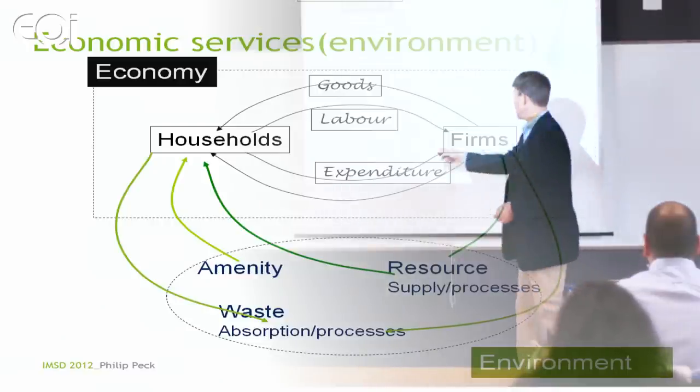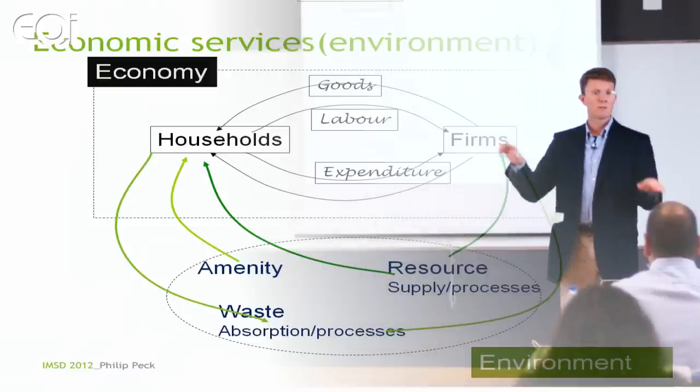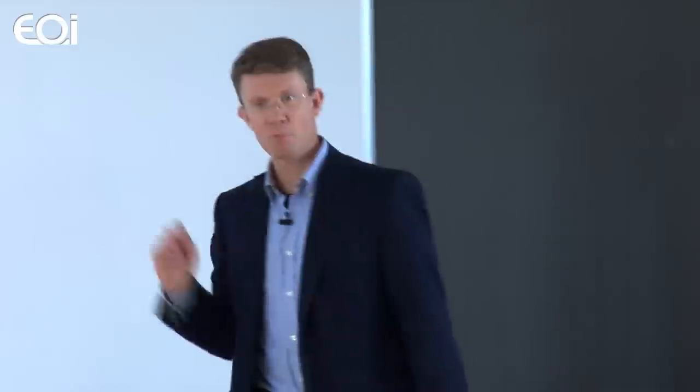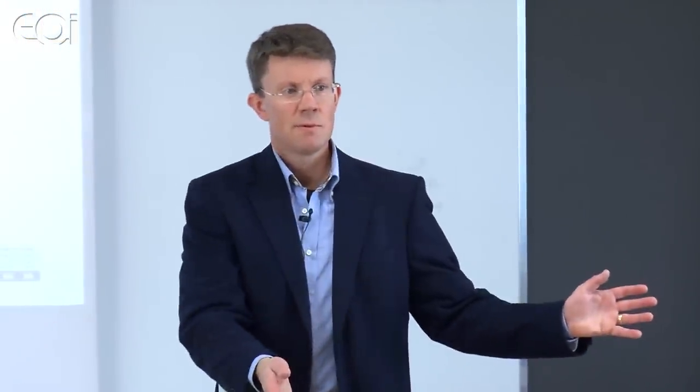That goes back into the environment which either becomes a storage for waste, or a process that converts or neutralizes waste. It can also deliver processes that control things like climate — on a global scale we talk about climate change; on a local scale, if an area has been deforested you can have changes to the microclimate. So: microclimate, regional climates, global climate — these are where the processes get changed. That's just a diagram that everybody feels comfortable with — you're nodding your heads. But one question to think about when we have a five-minute break.